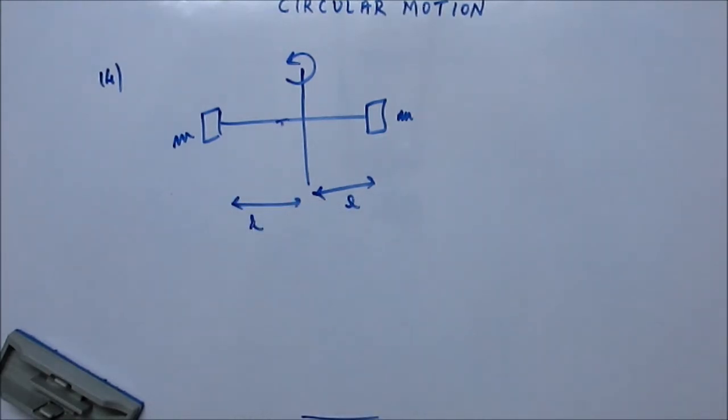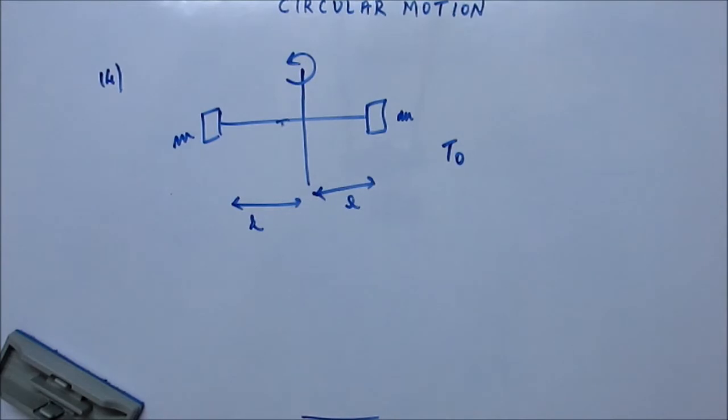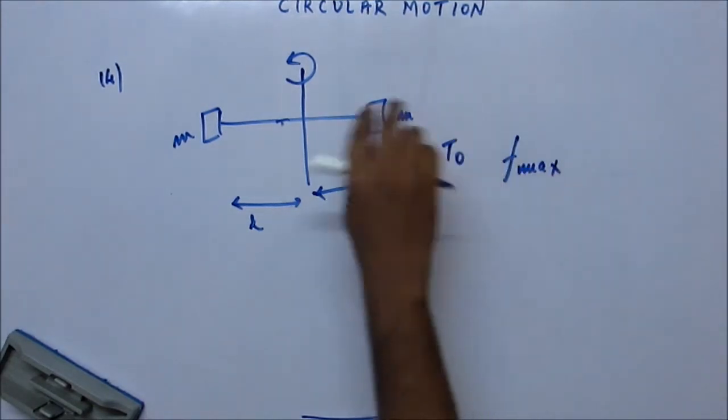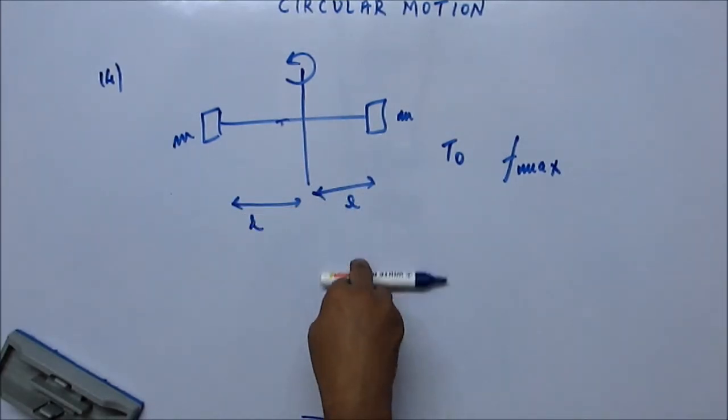The breaking strength of the rod is T0. If the rod has more than T0 of tension, the rod will break. So the breaking strength of the rod is T0. You have to find the maximum frequency with which the entire system could be rotated. The rod is kept like this and it is rotating like this, so find the maximum frequency.